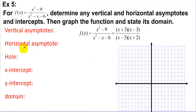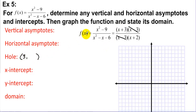Example 5 involves checking for holes first. After factoring, we find a matching factor (x - 3) in both numerator and denominator, so there is a hole at x = 3. To find the y-coordinate of the hole, plug x = 3 into what remains: 6/5 = 1.2. So there's a hole at (3, 6/5).